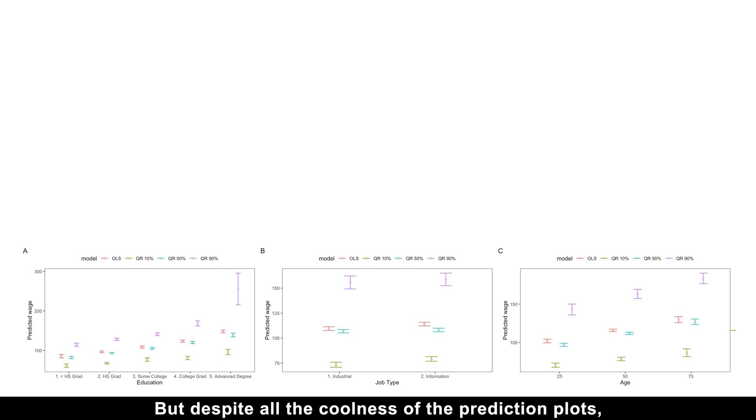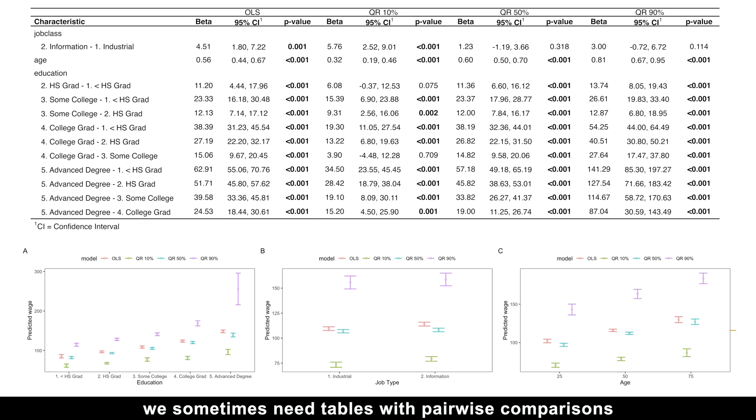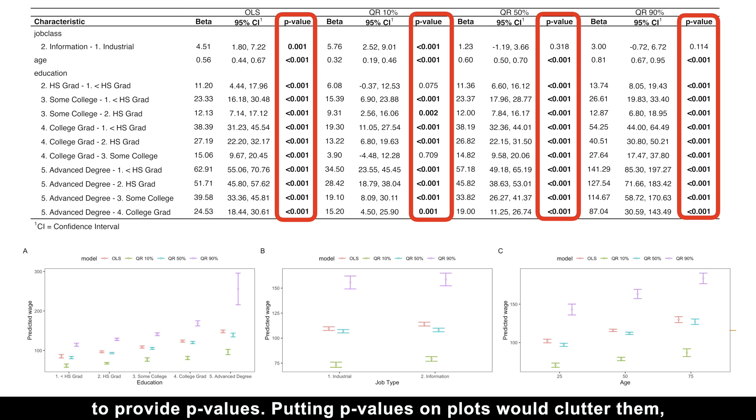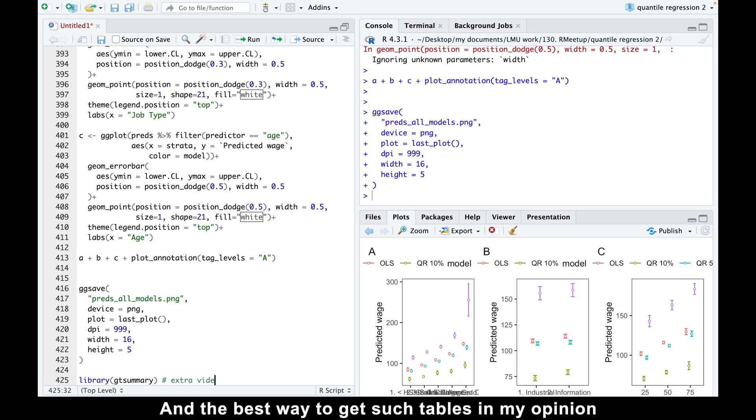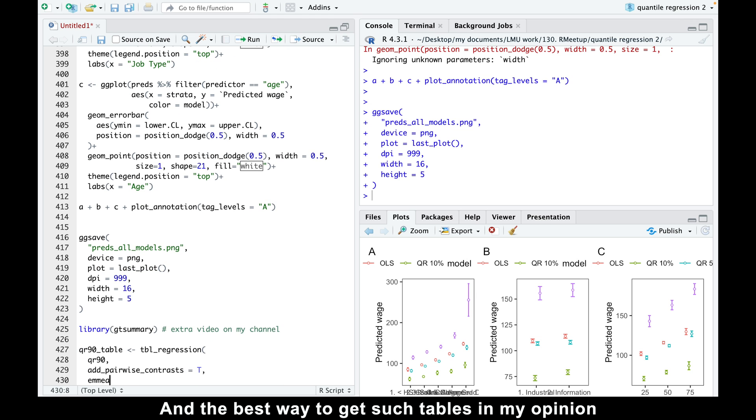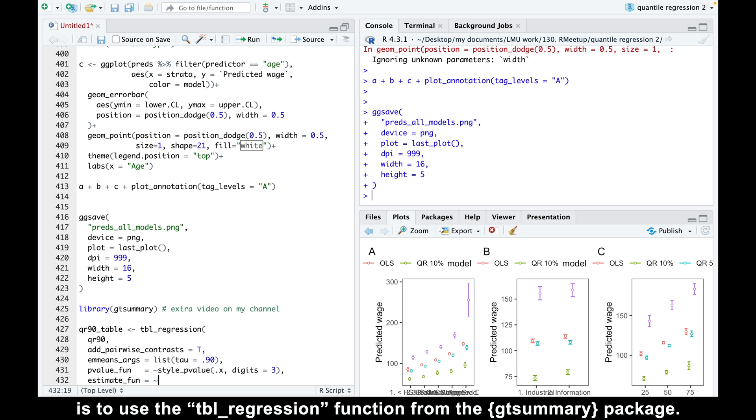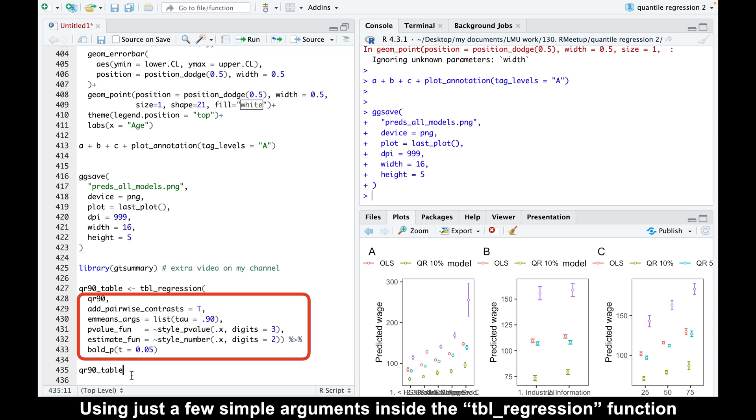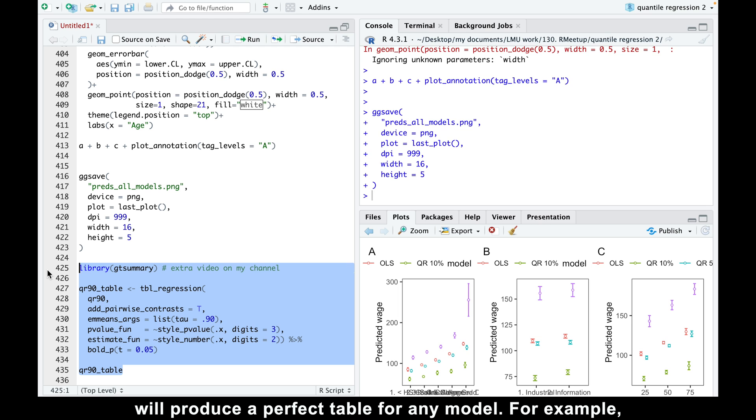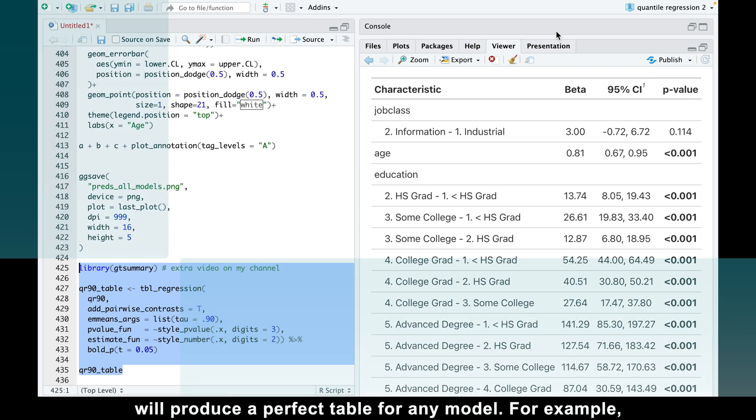But despite all the coolness of the prediction plots, we sometimes need tables with pairwise comparisons to provide p-values. Putting p-values on plots would clutter them, so tables are sometimes a better choice. And the best way to get such tables, in my opinion, is to use the tbl_regression function from the gtsummary package.